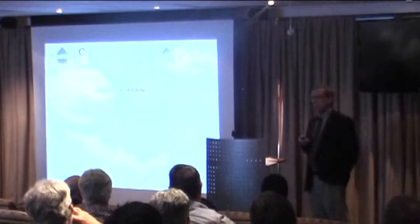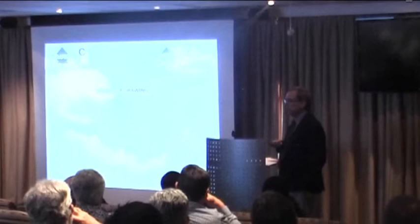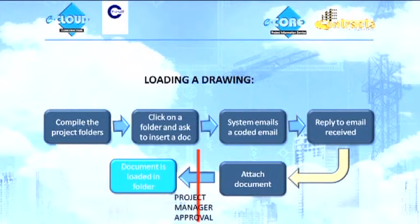I just want to explain how simple it is to load a drawing. Because this is where I think the system starts to come into its own relative to an FTP site. You compile the project folders. This is effectively the drawing register that an architect would normally use, or any professional. You click on a folder and ask to insert a document. A folder is a drawing. So, site plan. You click on site plan. You say, I want to insert a drawing. The system emails your coded email. You attach. You reply to the email. You attach the document. There's a project management approval process which is optional. And if he approves it, it goes into the right folder as a new revision. That's it.